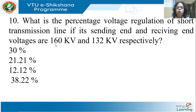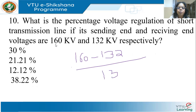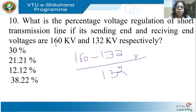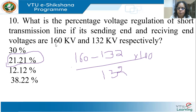What is the percentage voltage regulation of a short transmission line if the sending end voltage is 160 kV and receiving end voltage is 132 kV? Using the formula: (Vs − Vr)/Vr × 100 = (160 − 132)/132 × 100 = 28/132 × 100 ≈ 21.21%.